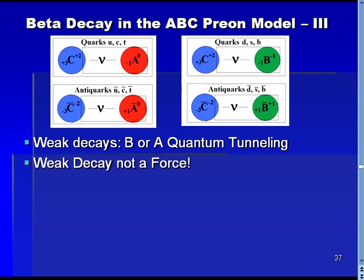Hence, in the ABC prion model, the weak decays are identified as radioactive tunneling decays, and there is no weak force.